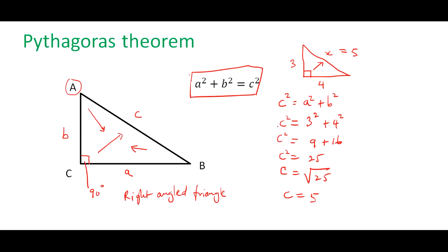So you just need to remember the formula: A squared plus B squared is equal to C squared. Make sure you label the right angle triangle properly, and remember this equation only applies to right angle triangles. So if you had a triangle with sides 2 and 3 but no right angle, we cannot apply Pythagoras' Theorem. You must have a 90 degree angle in the triangle to use this formula.